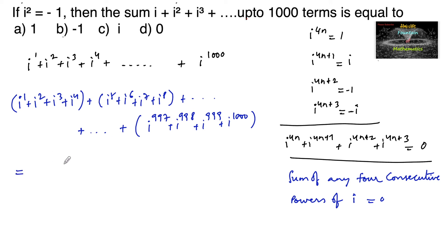So these 1000 terms are divided into equal groups of 4. We can say this is 0 + 0 + ... + 0. Finally, the answer is 0, which is option D.